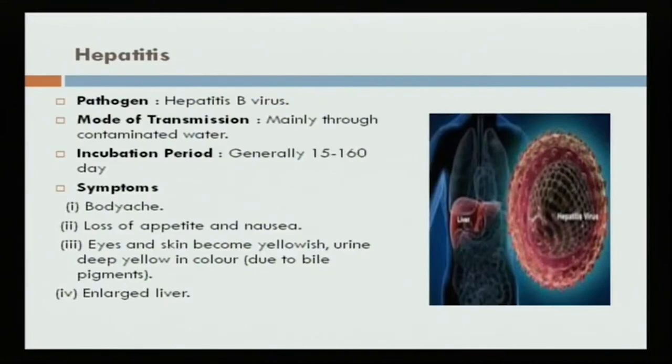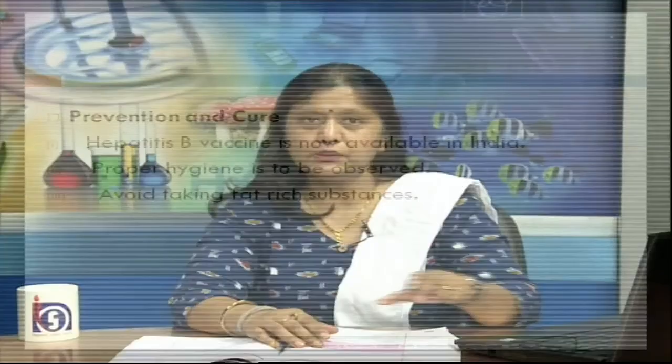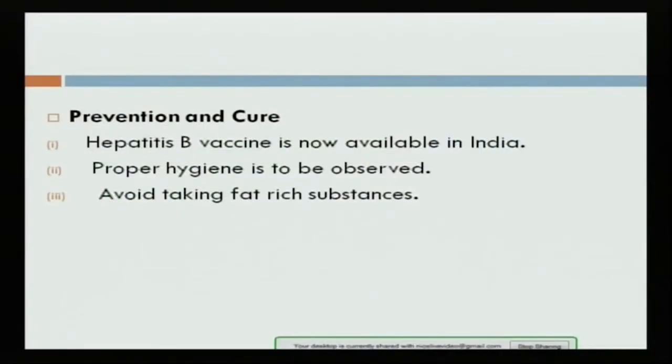Hepatitis B virus causes hepatitis. It spreads mainly through contaminated water and the incubation period is 15 to 160 days. Symptoms include body ache, loss of appetite, nausea and vomiting. Eyes and skin become yellow, urine becomes deep yellow, nails also become yellow, and the liver becomes enlarged. Prevention includes avoiding contaminated water. Hepatitis B vaccine is also available in India as a precaution.